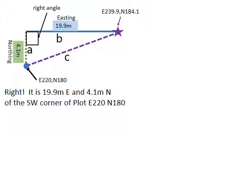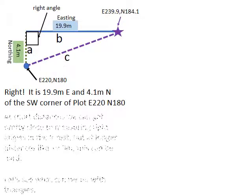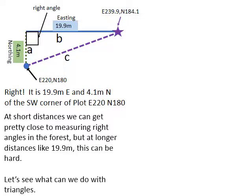Now, how do we map in a tree into that quadrat? Well, at short distances we can get pretty close to measuring right angles in the forest, but at longer distances, like 19.9 meters, this can be hard. So in practice, we take a different approach, and it relies on envisioning the world as a set of triangles.